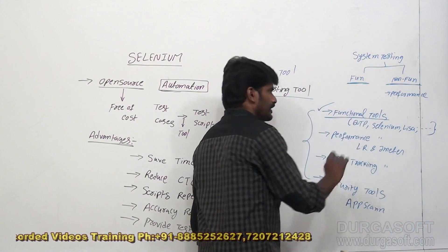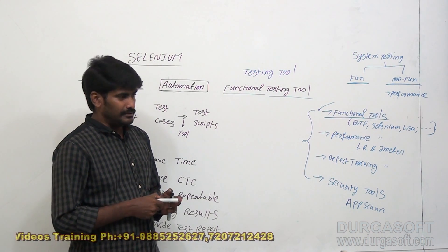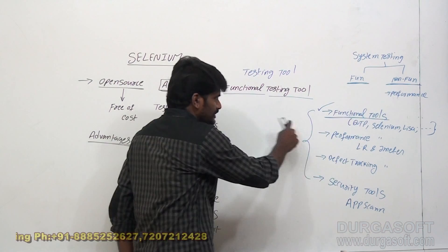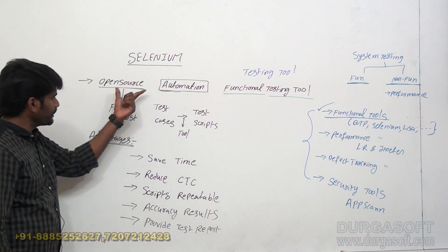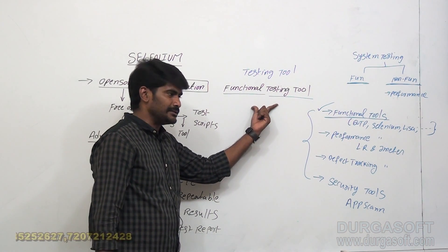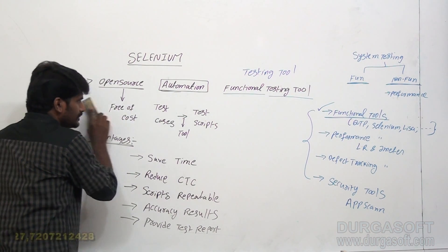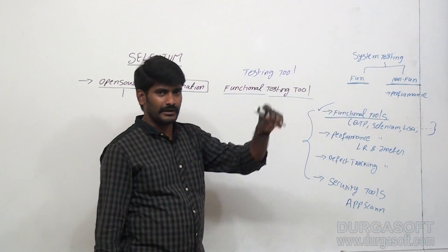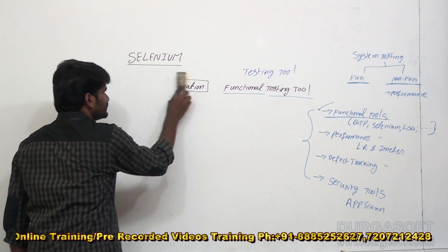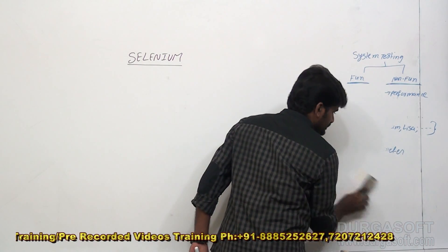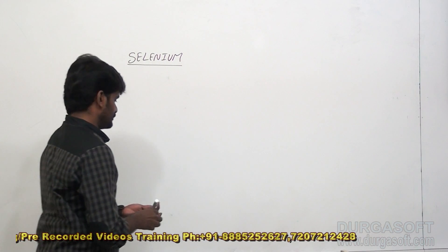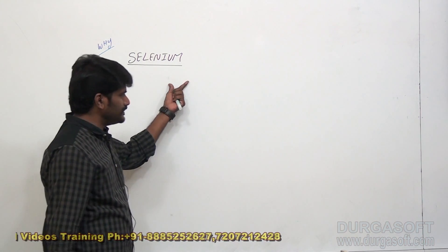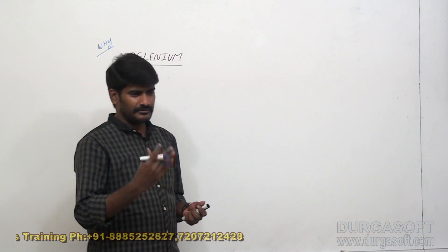Functional tools are very, very important because every application's functionalities are mandatory. That is why every organization maintains a separate functional testing team, and that is why Selenium is our functional testing tool. So Selenium is an open source automation functional testing tool. Among functional tools — QTP, Selenium, Lisa, Tosca, CodedUI, Cucumber, and multiple others — why specifically Selenium? Because nowadays there are so many job opportunities in Selenium.